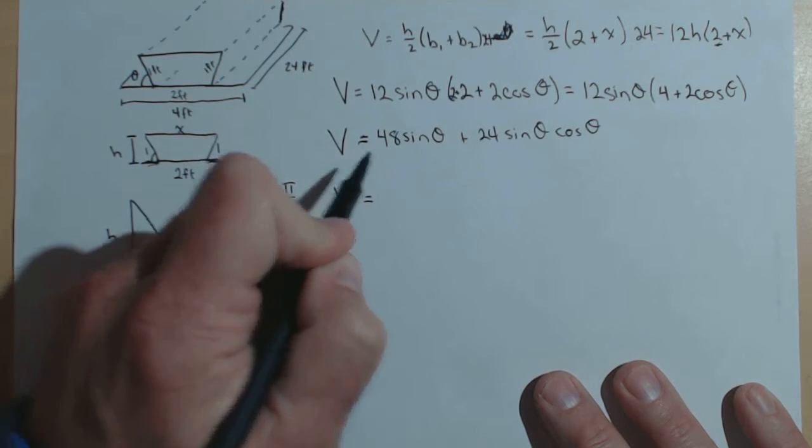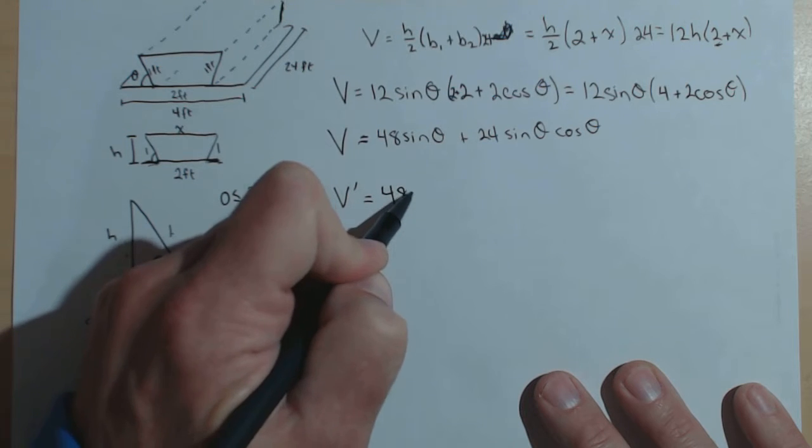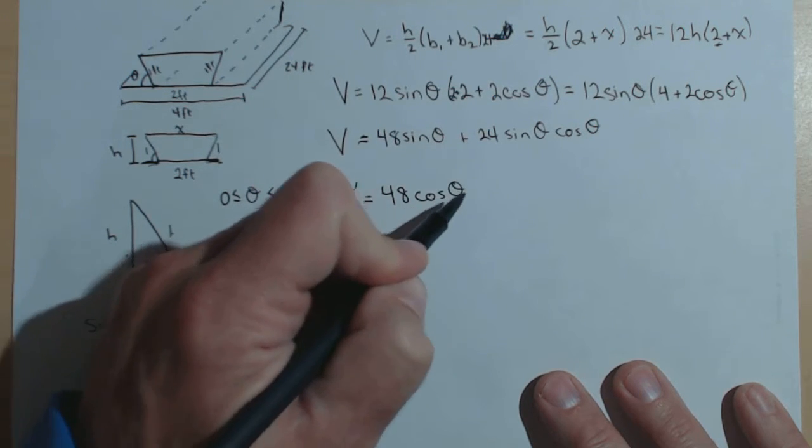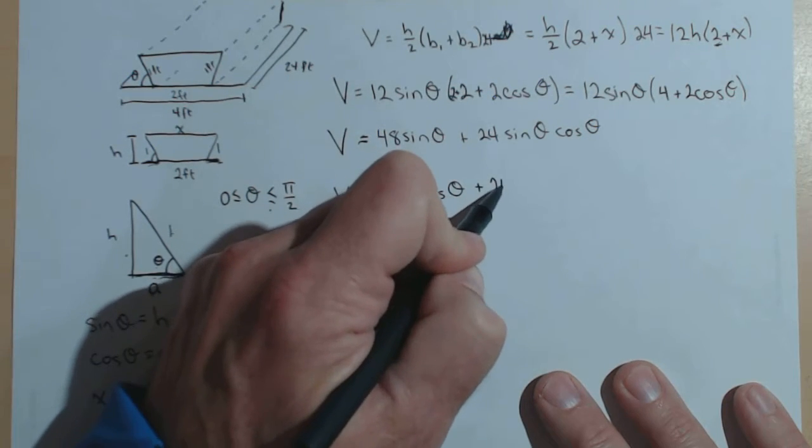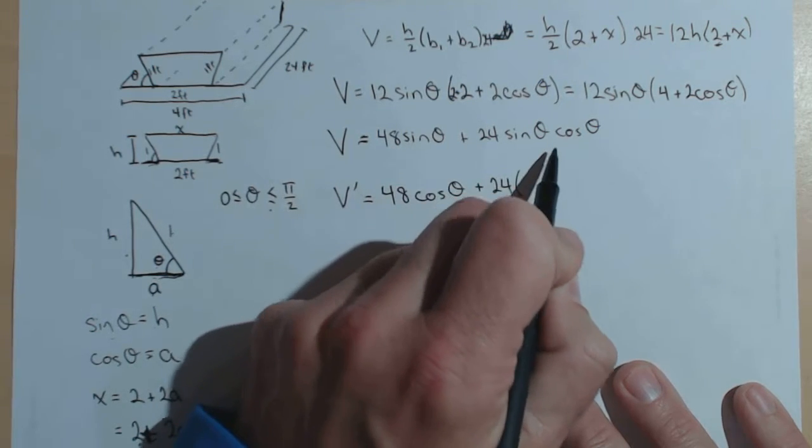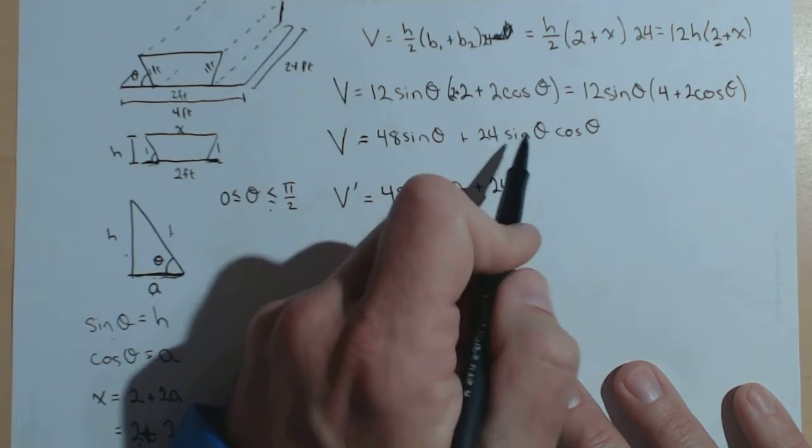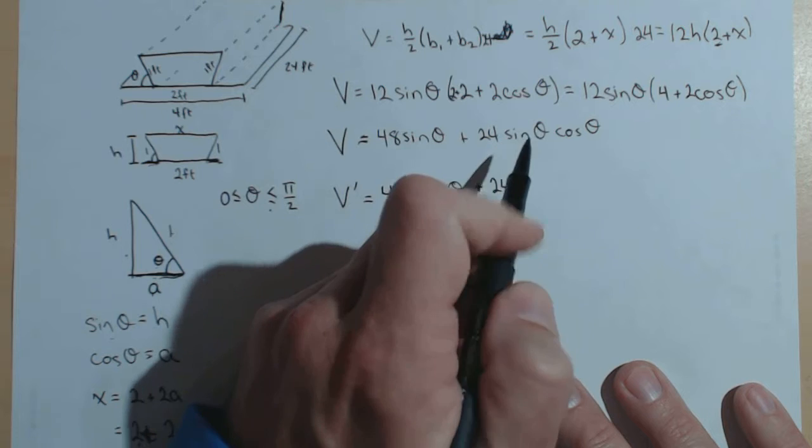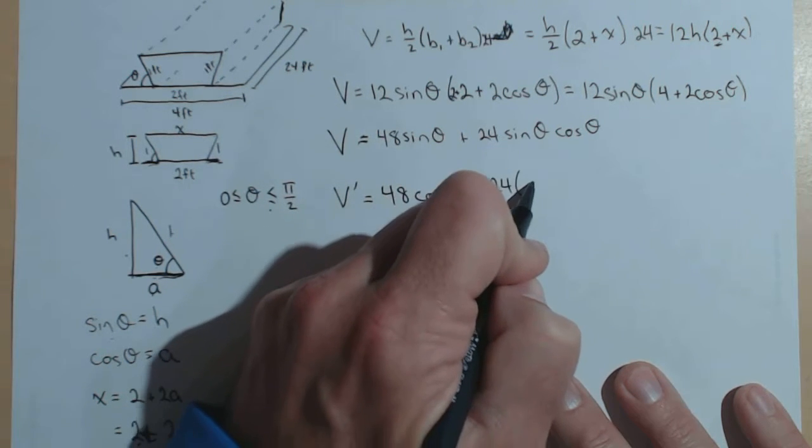So we've now got constrained optimization on a closed bounded interval. We're guaranteed to have a maximum and a minimum. So V prime is 48 cosine of theta. Plus, I'm going to leave the 24 out and do a product rule on sine theta, cosine theta.